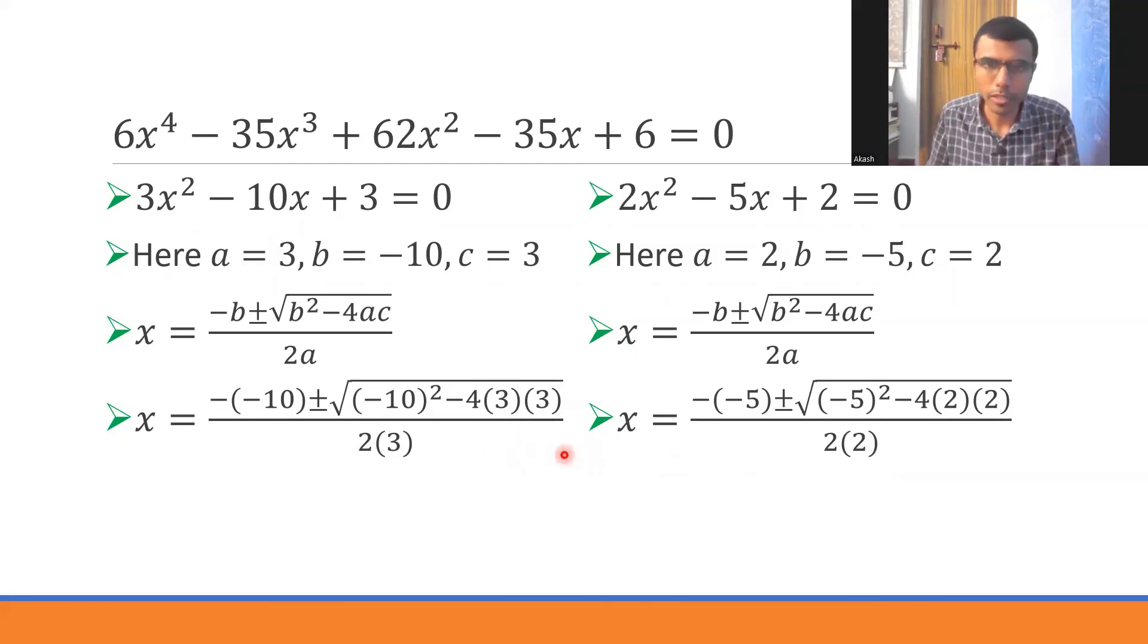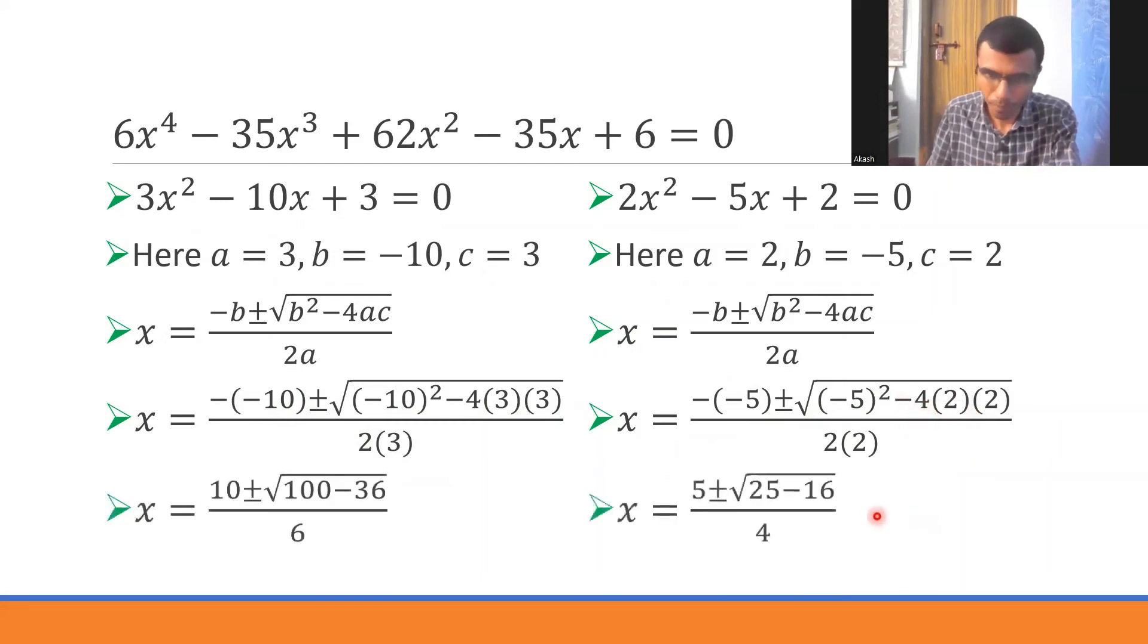Just substitute the terms. -(-10) = 10. 10² = 100. 4×3×3 = 36. So (10 ± √(100-36))/6. And (5 ± √(25-16))/4, since 5² = 25 and 4×2×2 = 16.